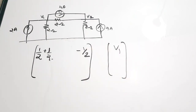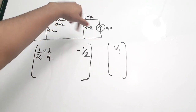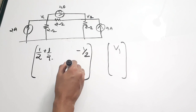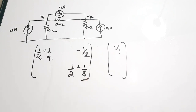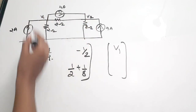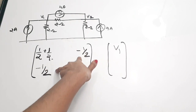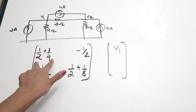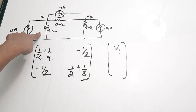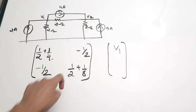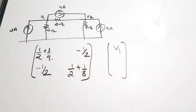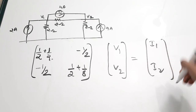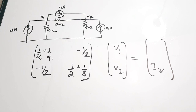Now forming the equation for the v2 node: the resistors directly connected to it are 2Ω and 8Ω, so we write 1/2 + 1/8. Since the 2Ω is shared between the two nodes, we place minus 1/2 as the off-diagonal element. The diagonal elements are the direct resistors for each node, and the off-diagonal elements are the shared resistors. This matrix is then multiplied by the column vector [v1, v2] and set equal to [i1, i2].